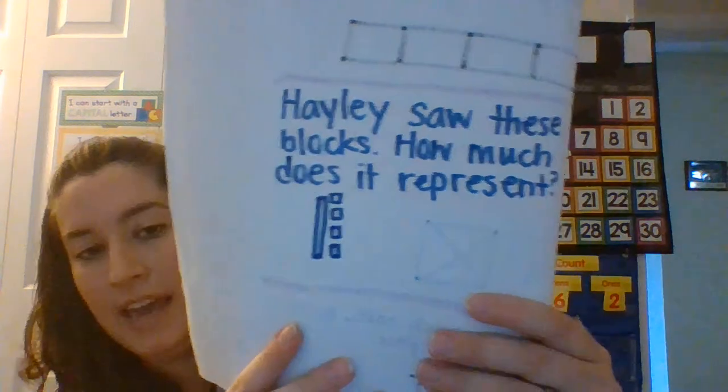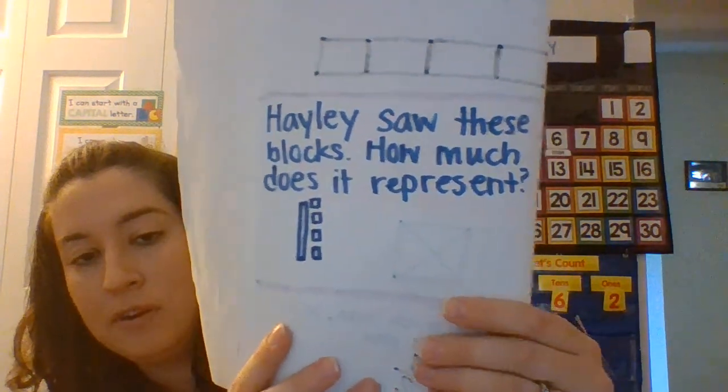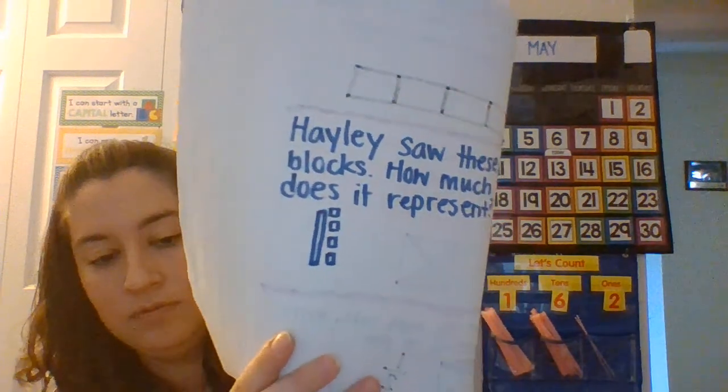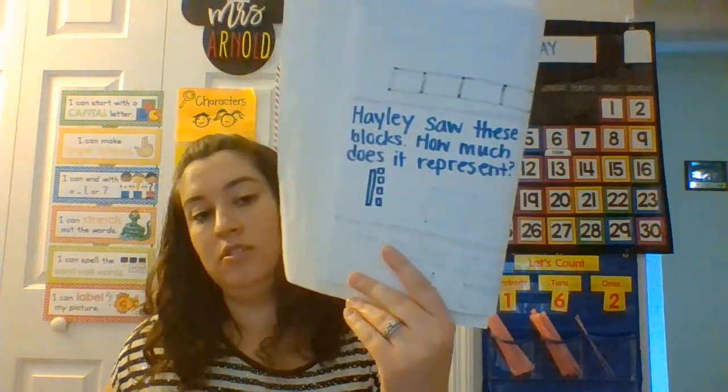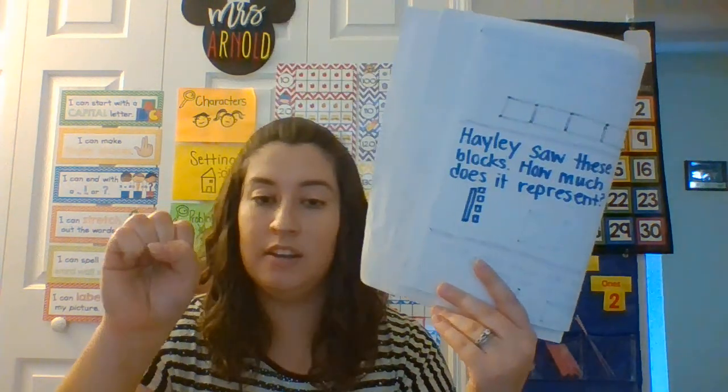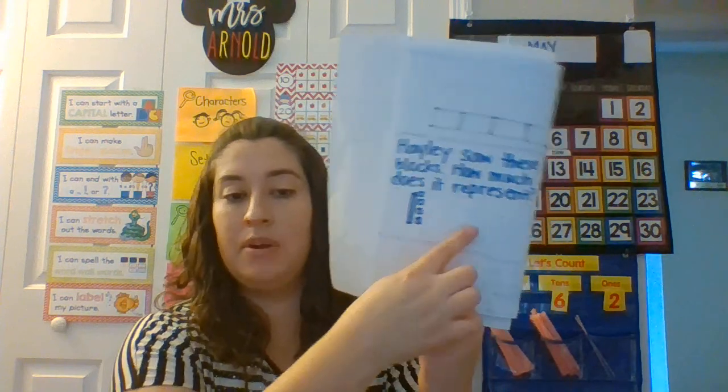I'm going to show you some base 10 blocks and you have to tell me what number it is. So if I just draw a line, that's equal to a group of 10. So Haley saw these blocks. That's what Haley saw. How much does that represent? I want you to write what this equals in base 10. One group of 10 and four ones — so a group of 10 and four more. Write me the number that goes with that. That is the end of our lesson today and I will see you later. Bye.